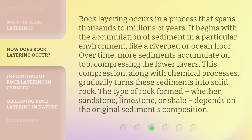Rock layering occurs in a process that spans thousands to millions of years. It begins with the accumulation of sediment in a particular environment, like a riverbed or ocean floor. Over time, more sediments accumulate on top, compressing the lower layers. This compression, along with chemical processes, gradually turns these sediments into solid rock. The type of rock formed — whether sandstone, limestone, or shale — depends on the original sediment's composition.